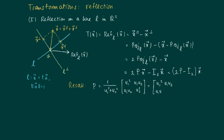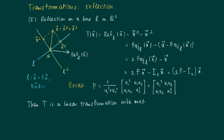Since we assume that the length of u is 1, we can simply leave out the scalar in front. So we get the matrix with u₁² and u₂² on the diagonal, and u₁u₂ on the off-diagonal. We see that T is a linear transformation — so a reflection in a line is a linear transformation with a matrix.